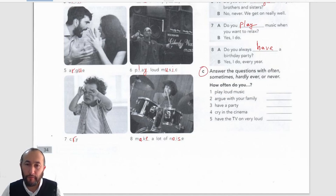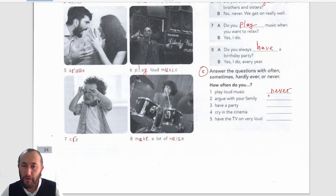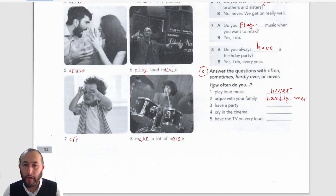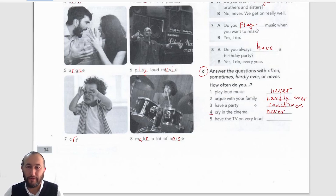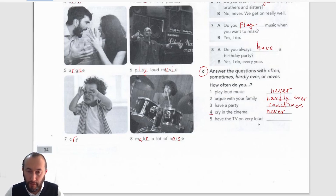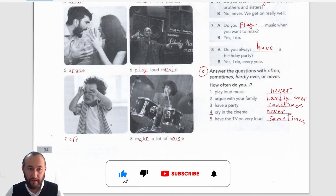C: answer the questions with 'often', 'sometimes', 'hardly ever', and 'never'. How often do you play loud music? Never. How often do you argue with your family? Hardly ever — that means almost never. How often do you have a party? Sometimes. How often do you cry in the cinema? Never — I go mostly with my kids and we watch cartoons. How often do you have the TV on very loud? Sometimes, when we watch movies. Page 34 is done — we'll continue with 35 in the next video.